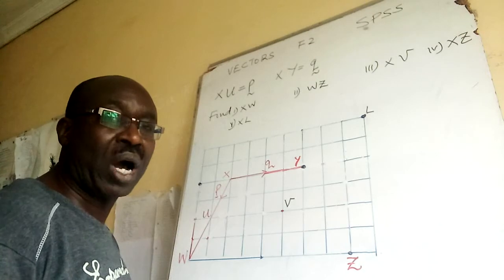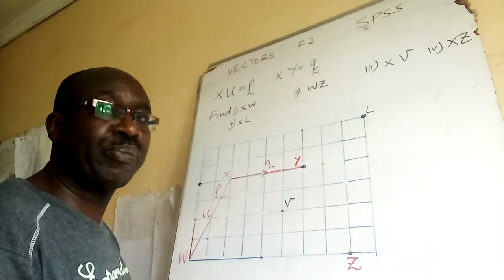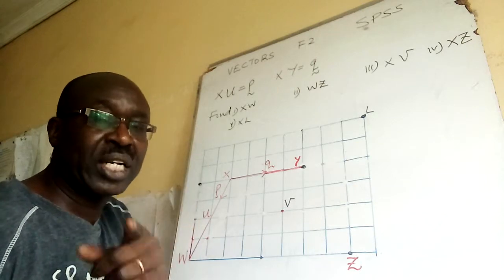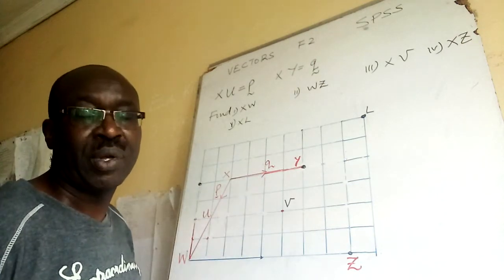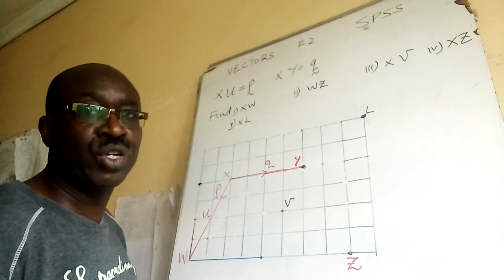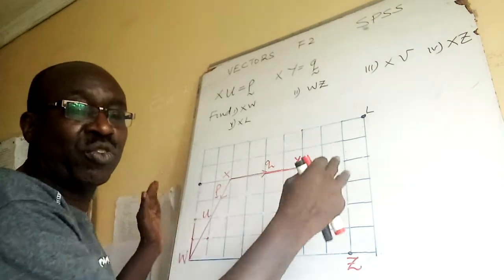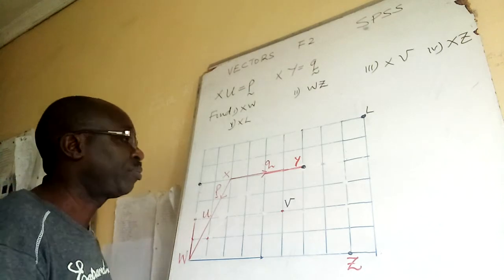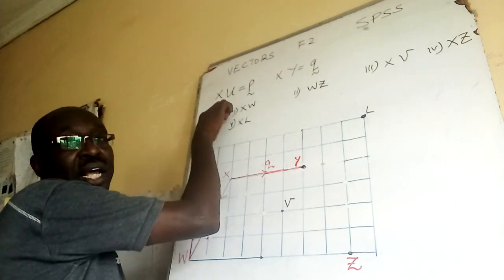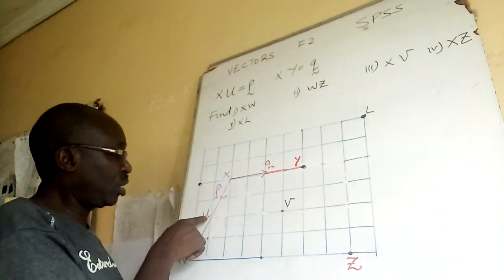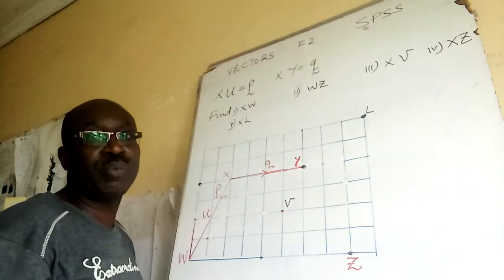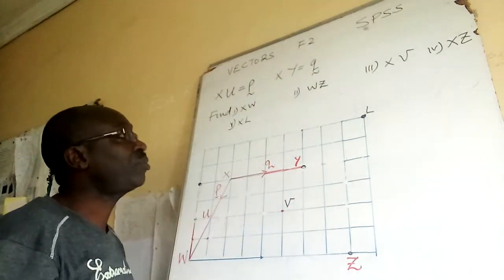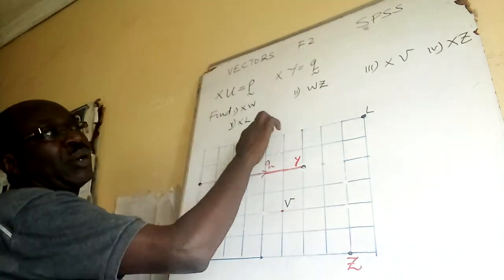Hello boys and girls, welcome to our SPSS lesson — Student Problem Solving Session. So we have this kind of diagram. I'm trying to conclude my first six lessons with a problem solving session. You are told XU is equal to vector P, and from X to Y is vector Q.